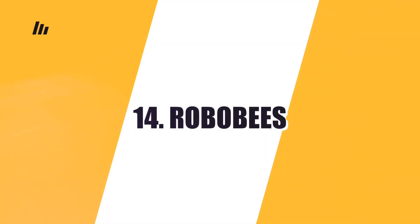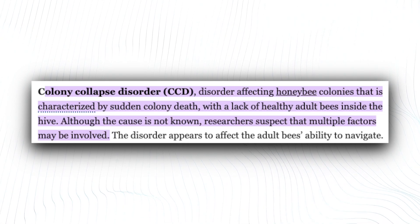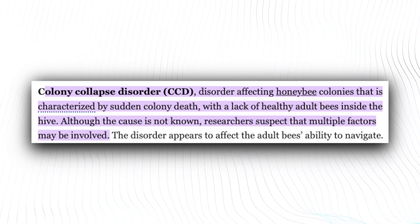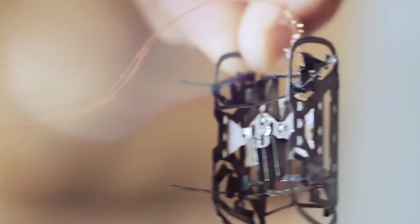Number 14: Robobees. Over the past decade or so, honeybee populations have suddenly and mysteriously fallen victim to colony collapse disorder. The population is decreasing significantly every year, but no one knows exactly why.